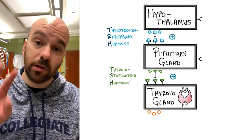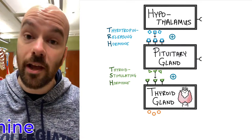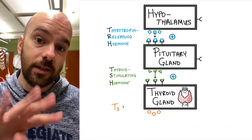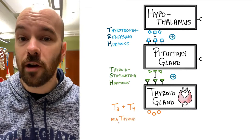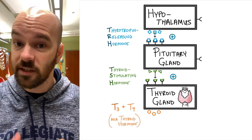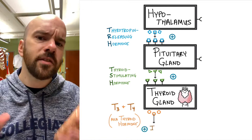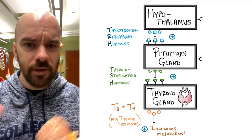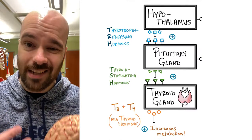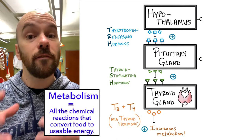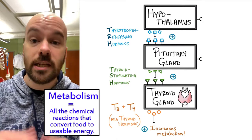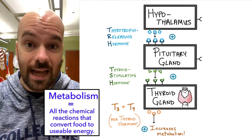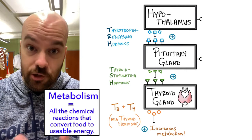The thyroid gland releases two hormones: triiodothyronine and thyroxine, referred to as T3 and T4 for short. T3 and T4 have very similar functions so we'll treat them as the same thing. They are hormones that regulate your metabolism — which we can simplify as all the chemical reactions in the body that convert food into energy. T3 and T4 travel through the bloodstream and stimulate cells throughout the body to increase the breakdown of food into usable energy.